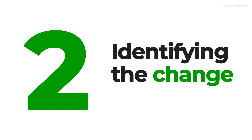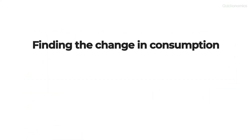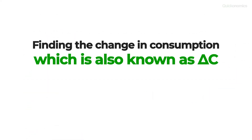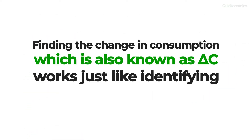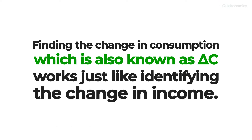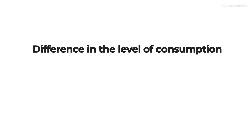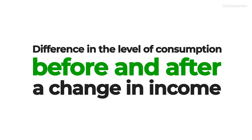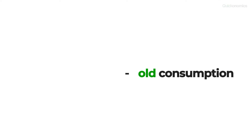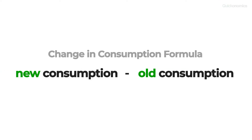Now let's move on to step two: identifying the change in consumption. Finding the change in consumption, also known as delta C, works just like identifying the change in income. Only this time, we are looking for the difference in the level of consumption before and after a change in income. To do that, we simply subtract the old consumption from the new consumption.